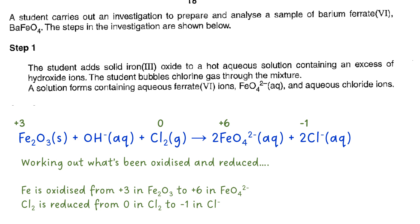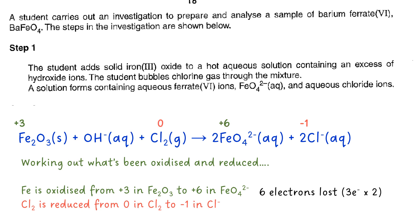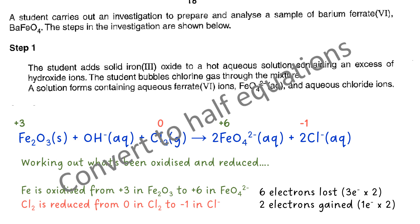Now it might be quite simple to assume that for example the iron has lost three electrons, but be careful because it's two irons this happened to. So we need to think about this and then we can see that six electrons are lost in fact and therefore in the chlorine only two electrons are gained. So that's an imbalance. So we can use half equations to sort that problem out.